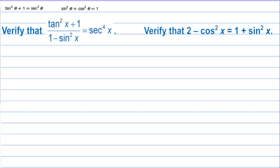Verify that tangent squared plus one over one minus sine squared is equal to secant to the fourth. We want to prove that this is a true statement. In order to do that, we're going to pick the more complicated side and turn it into the more simple side. And I think clearly this is the more complicated side.